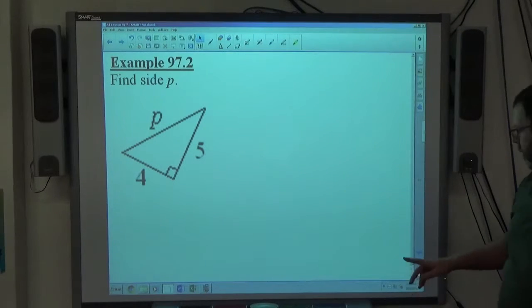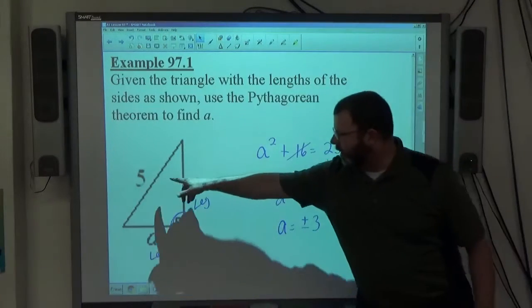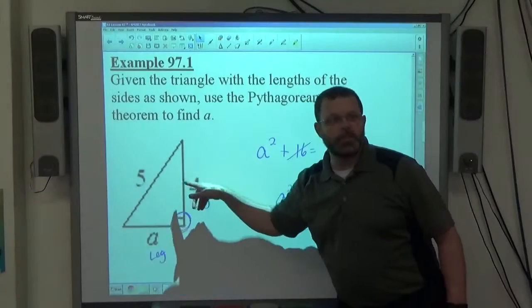Example 2, find side P. Notice the missing side here is A, and 5 and 4 are the other two sides.